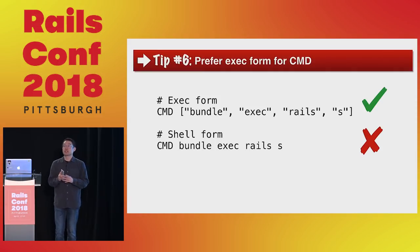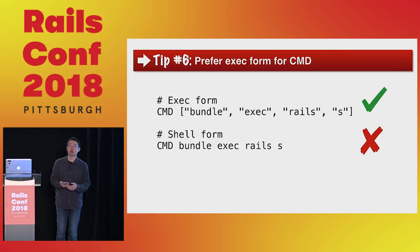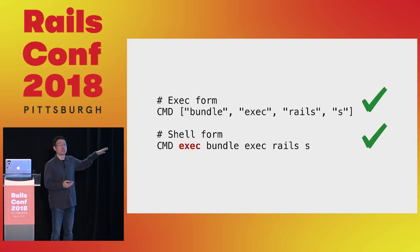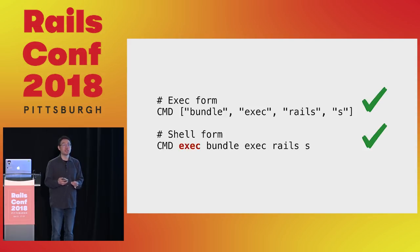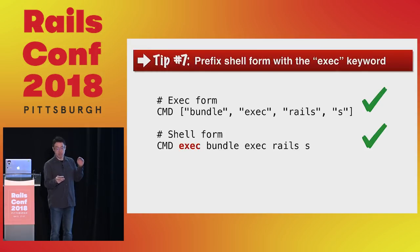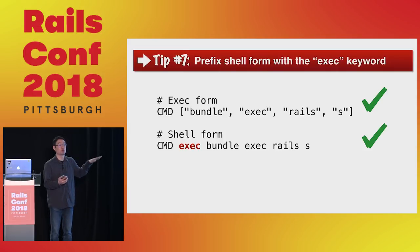If you find shell form useful — for example when you need shell substitutions — there is a workaround: insert exec in front of your process. Exec is a bash built-in that tells bash this process is the main thing going on, so it propagates signals into it. If you need to use shell form, prefix your command with exec.